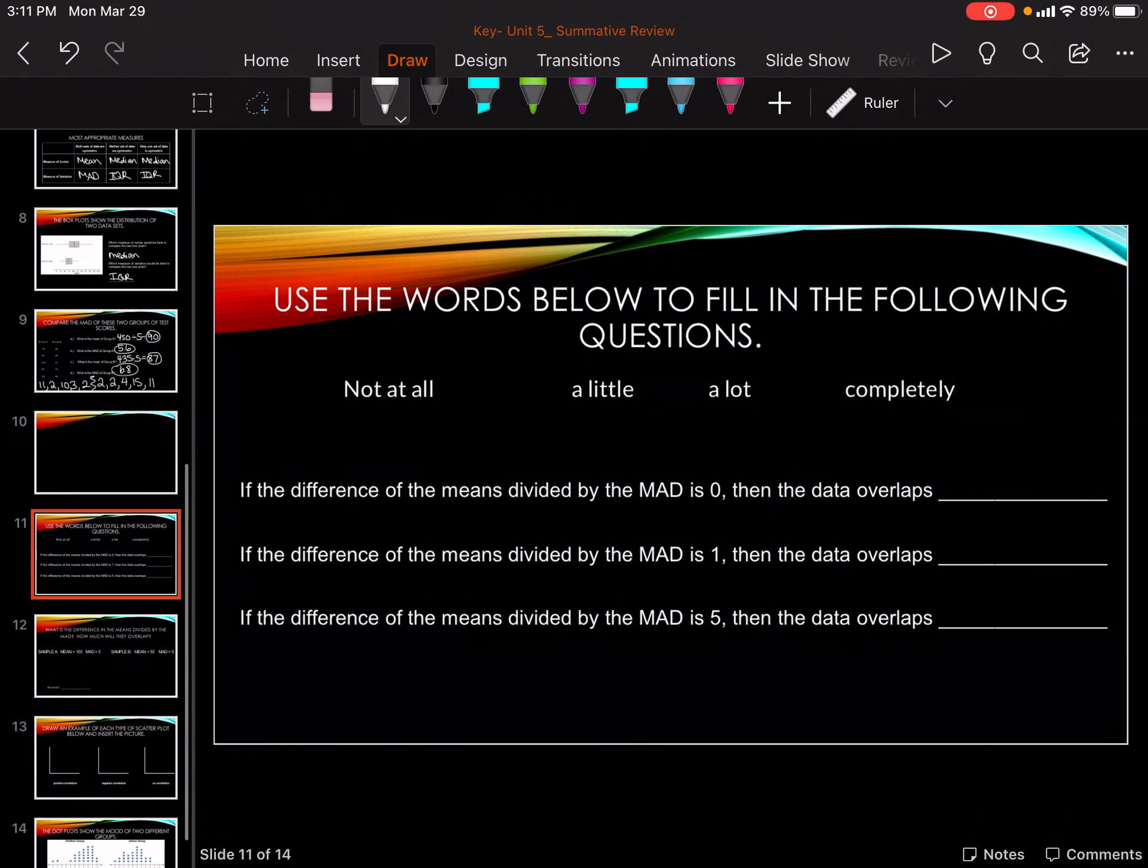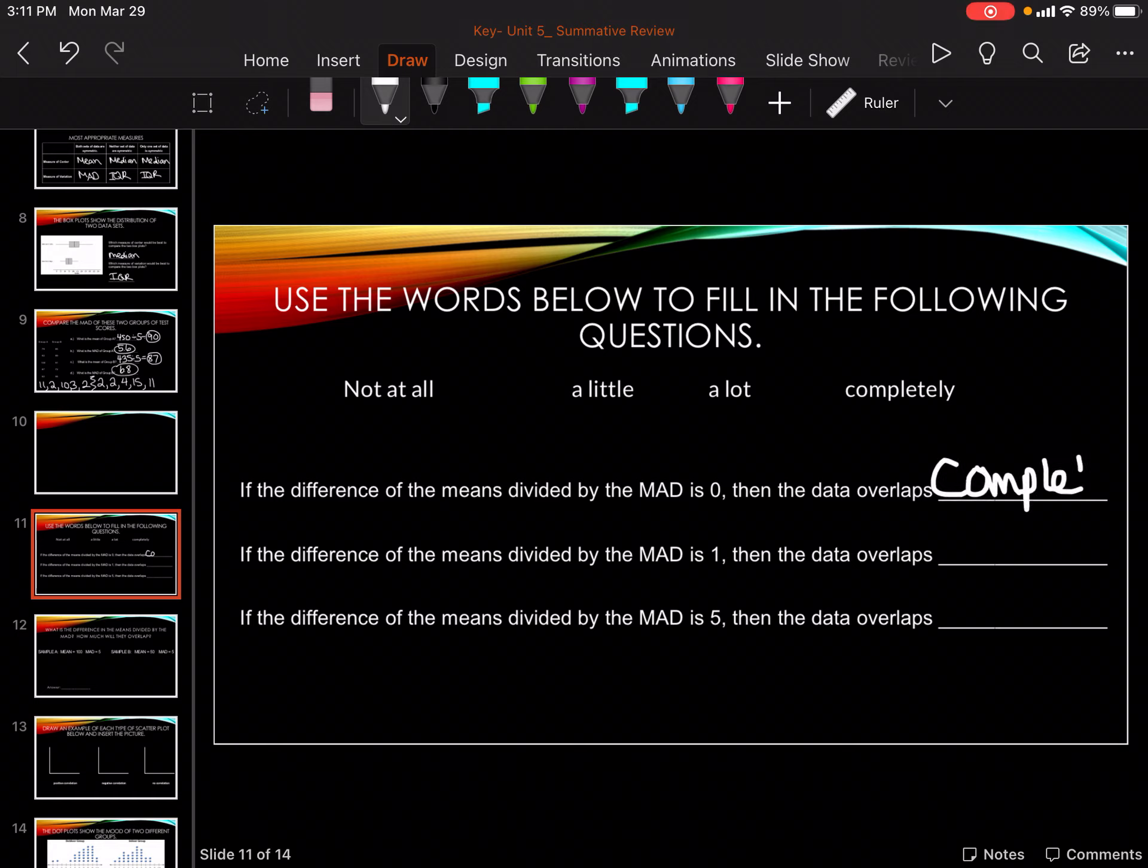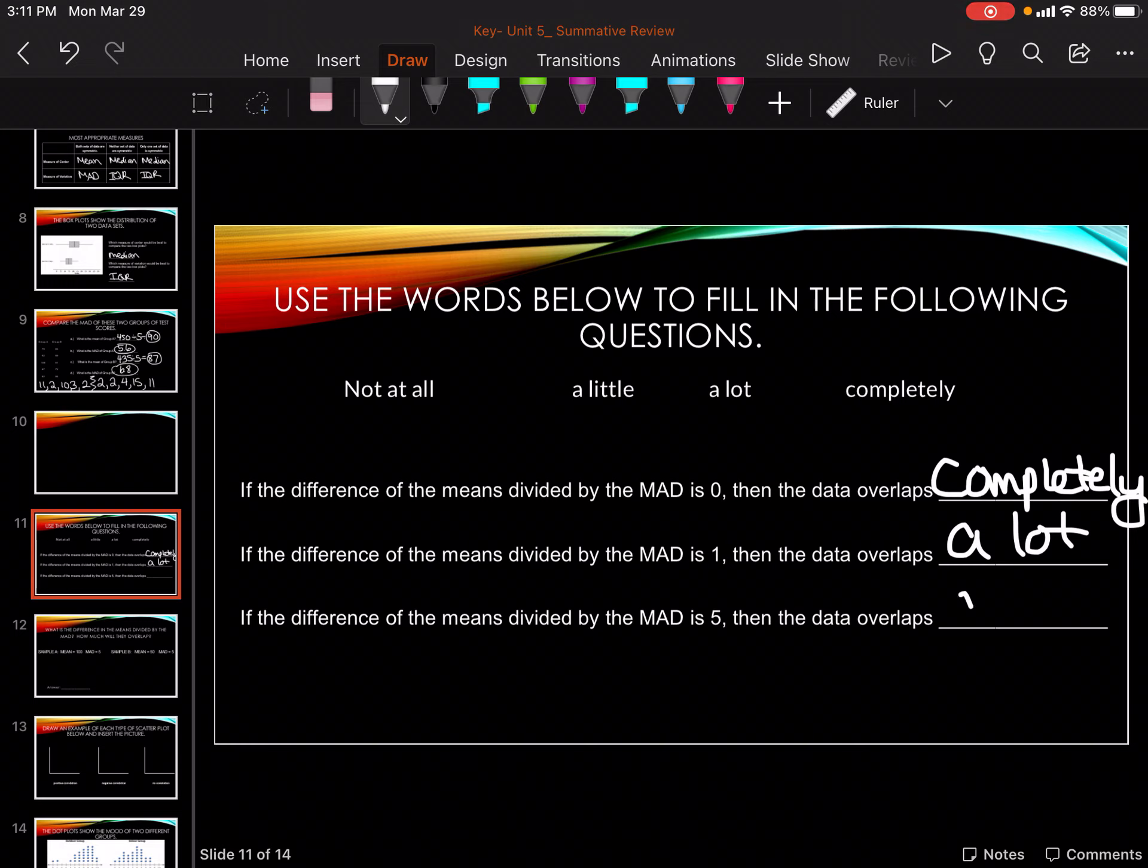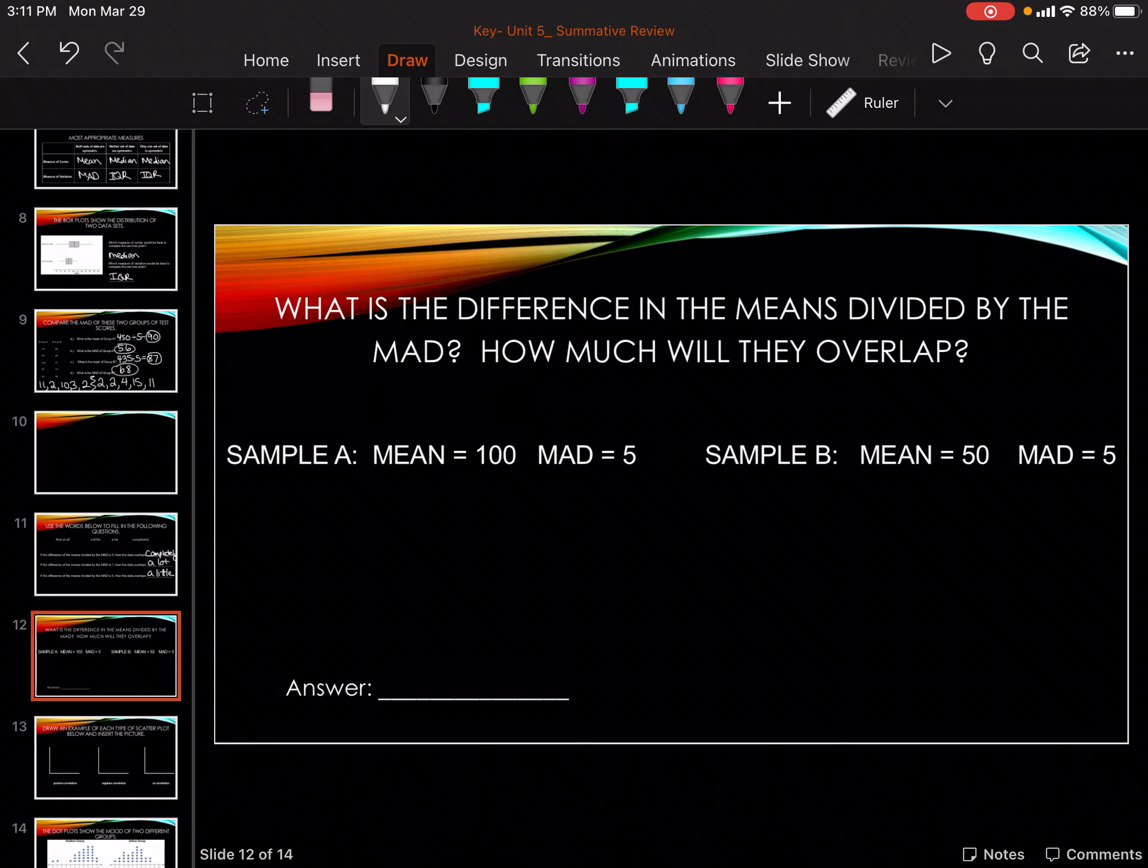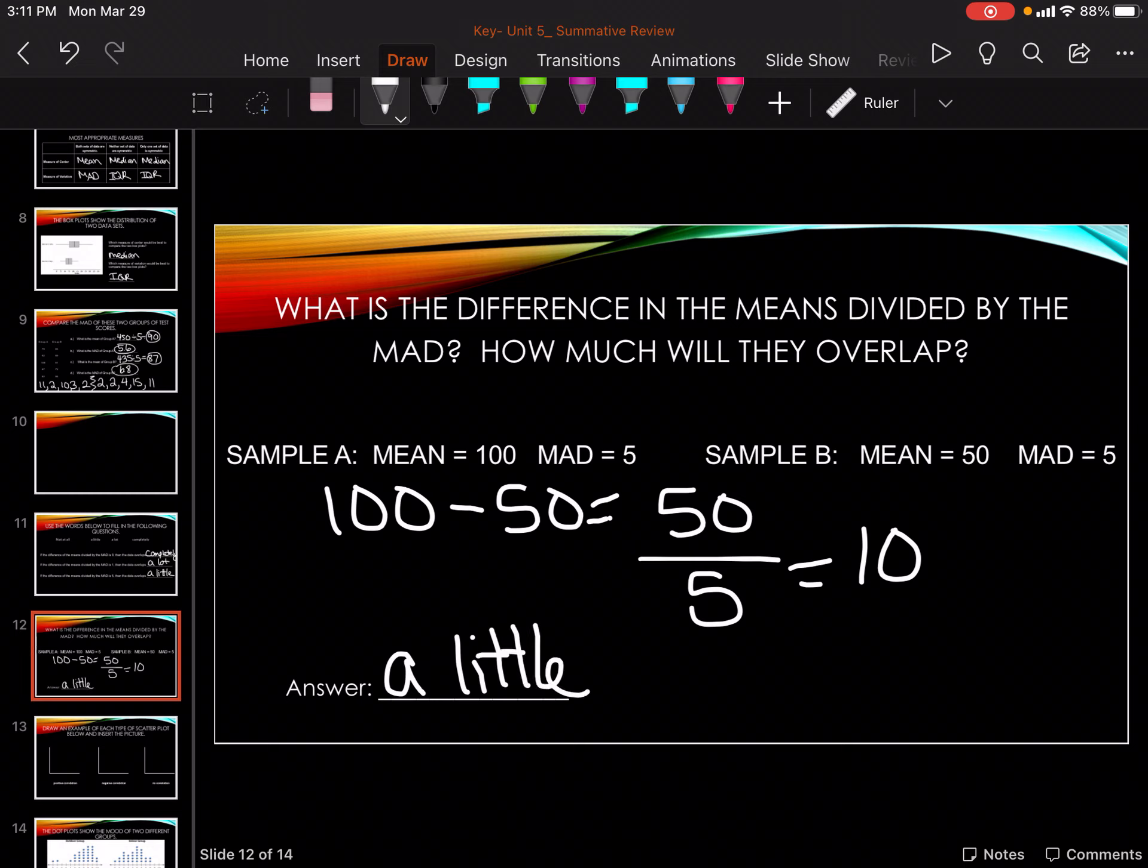Okay, so remember when the difference of the means divided by the MAD is zero, then it overlaps completely. If it is 1, it is a lot. If it's 5, it's a little. And remember the only way that we know that it's not at all is if we can actually see the data set. So difference in the means divided by the MAD, so 100 minus 50 gets me 50 divided by that gives me 10. So again, I'm going to be pretty spread out but it's still a little overlapping because we don't know what the data set is.